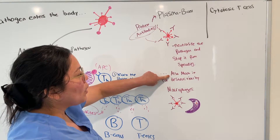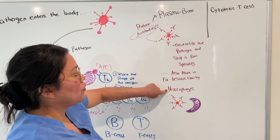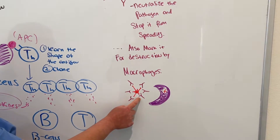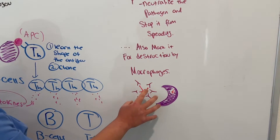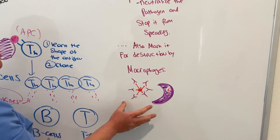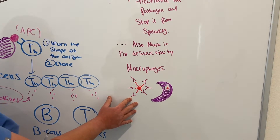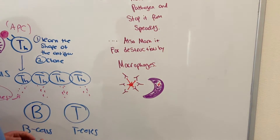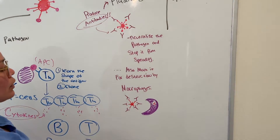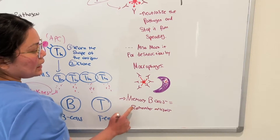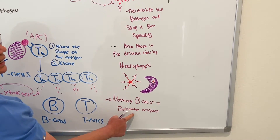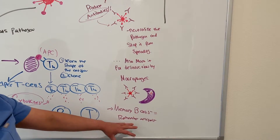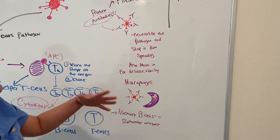When a macrophage comes around and it sees antibodies surrounding the pathogen, it's going to be kind of like a red flag for it, and it's going to eat up the pathogen. There are also memory B cells. Memory B cells are going to remember the antigen, and this is going to help your immune system act faster whenever you encounter the same pathogen again.